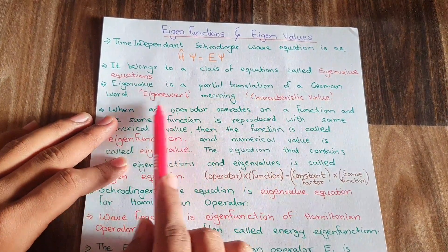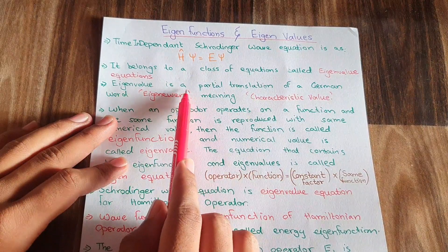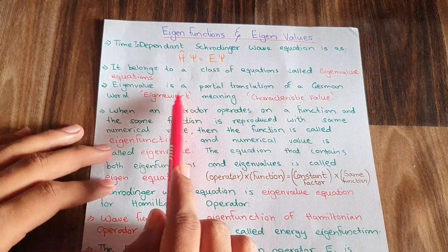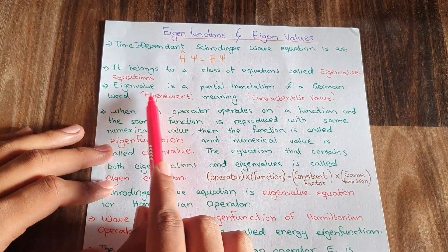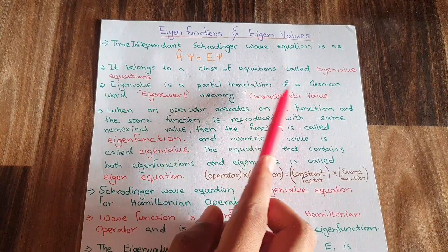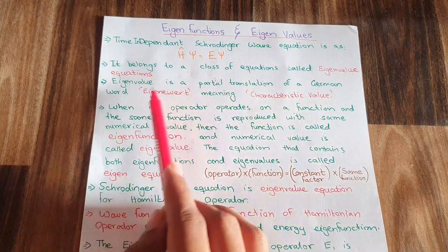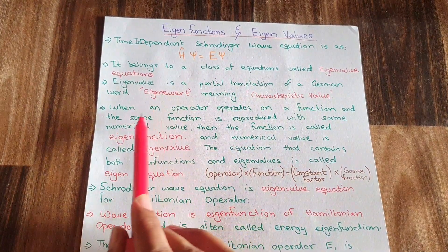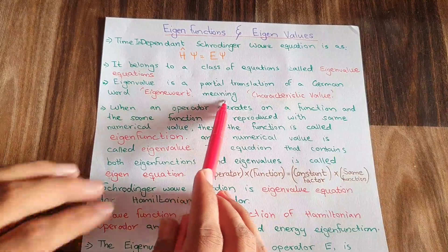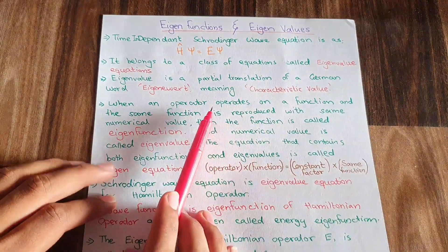The eigenvalue is a partial translation of the German word 'eigenwort', which means characteristic value.